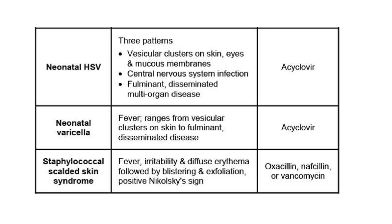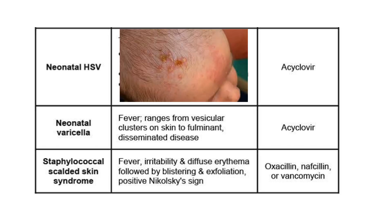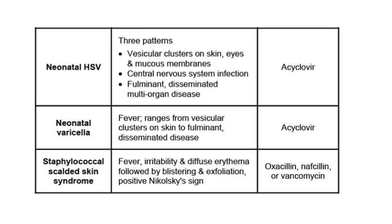The next rash is neonatal HSV — herpes simplex virus. It presents as vesicular clusters on the skin, eyes, and mucous membranes. It can also involve the central nervous system, and in severe cases can lead to fulminant disseminated multi-organ disease. The treatment is acyclovir. Here we can see the skin involvement as vesicular clusters in a neonate.